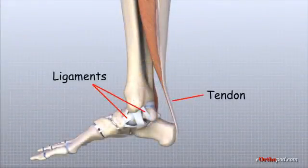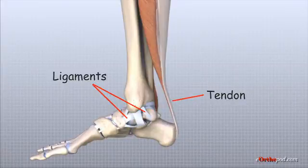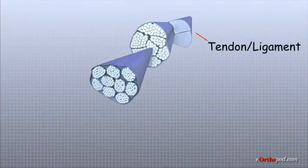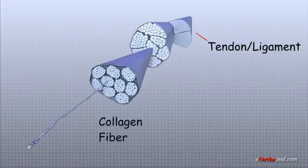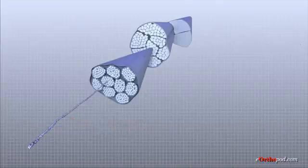Ligaments and tendons are soft tissues that attach bones to other bones and muscles to bones. Ligaments attach bones to other bones and tendons attach muscles to bones. Both of these structures are made up of small fibers of a material called collagen. The collagen fibers are bundled together to form a rope-like structure. Ligaments and tendons come in many different sizes and shapes, and the thickness of a ligament or tendon determines its strength.